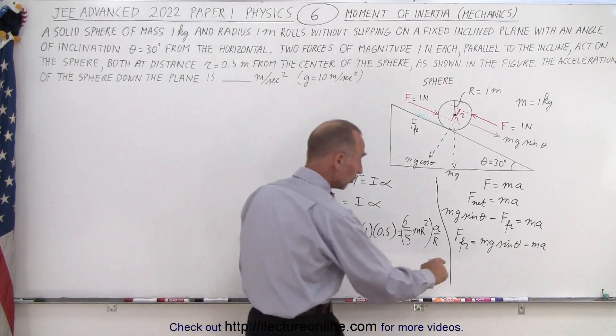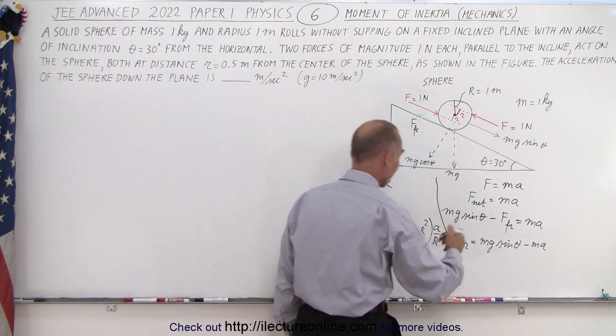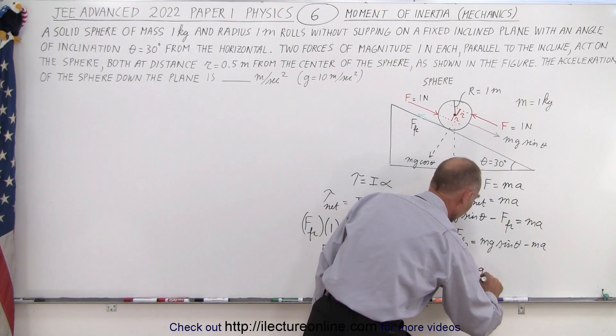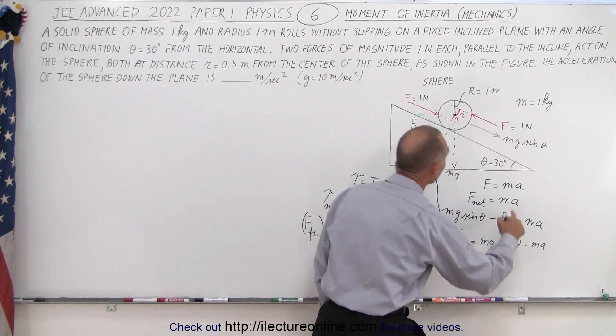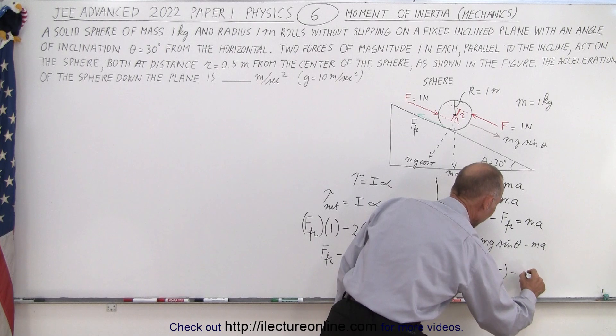Now, over here also, notice that we have the mass M here, which is equal to one, because mass is one kilogram. So, this can be reduced to force friction is equal to G sine theta, now the sine of 30 degrees is 0.5, so 0.5 minus A.